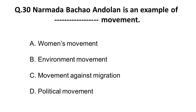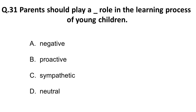The thirtieth question: Narmada Bachao Andolan is an example of what? It is associated with the social worker Medha Patkar. Generally it may come to mind that it is about a women's movement — but it is not. It is about the environment. So the correct answer is that Narmada Bachao Andolan is an environmental movement. Remember: it is an environmental movement.